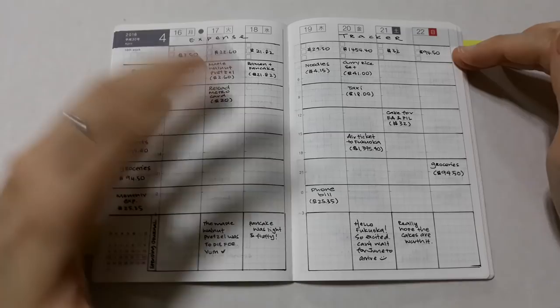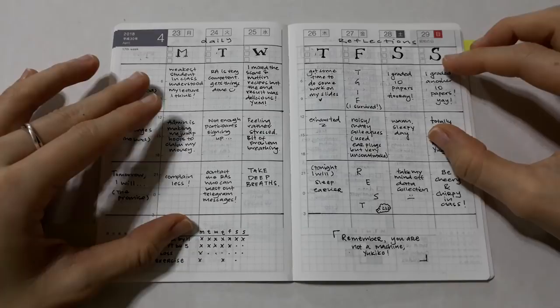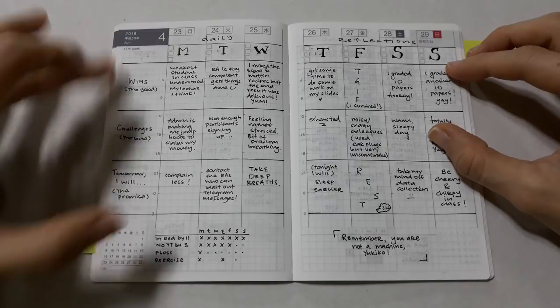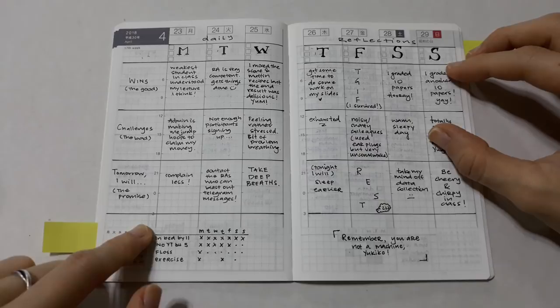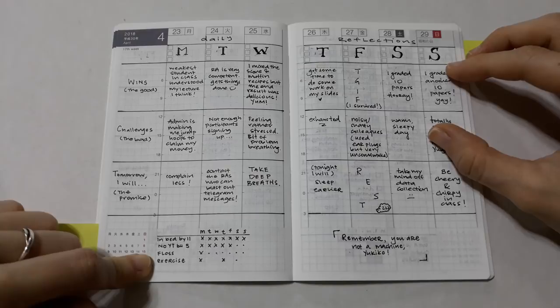A third way I would use the supplement is for daily reflection. Once again I divide the spread into rows, and each day I write down one good thing that happened to me that day, one challenge I faced, and then one thing that I resolved to change about myself the next day. At the bottom I have a habit tracker. I put dots on days that I want to do the habit. If I do the habit then I put a cross, and if I don't I just leave it.